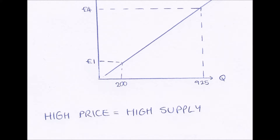This upward slope is because of a very important rule: if the price of a good is high, then the supply of it will also be high. This is because if the price of a good is high, there is likely a big profit margin, so there is more money to be made. Therefore, because businesses are motivated by profit, more companies will enter the market, meaning more businesses are producing that good, resulting in a greater supply of it.